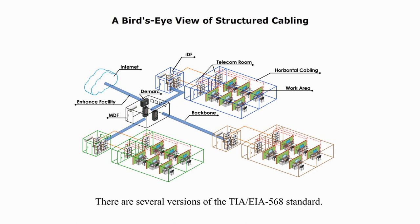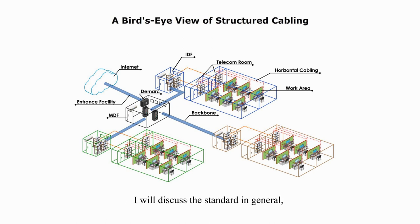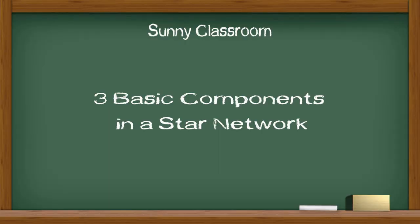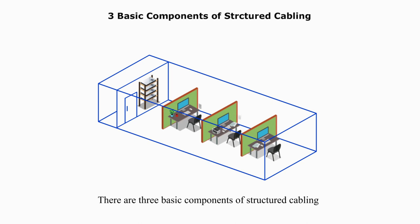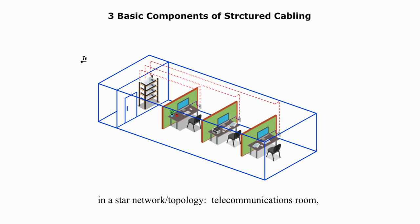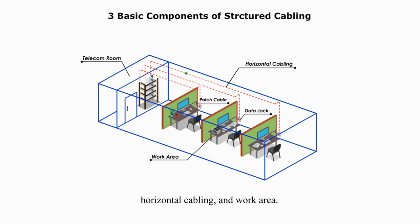There are several versions of TIA/EIA 568 standard. In this video and the next several videos, I will discuss the standards in general rather than any specific version. There are three basic components of structured cabling in a star network or topology: Telecommunications Room, Horizontal Cabling, and Work Area.